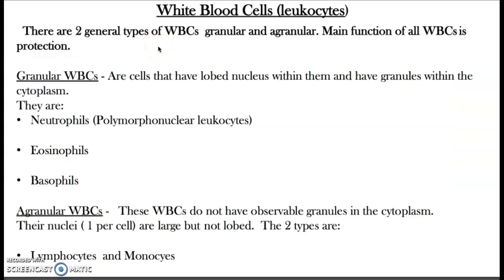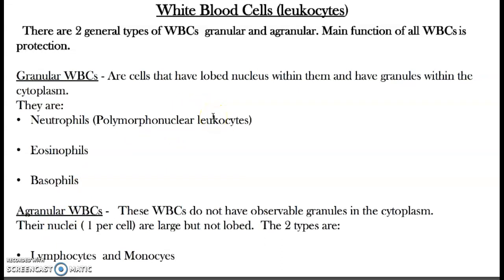Then we have the white blood cells or leukocytes — 'leuko' meaning white and 'cyte' meaning cells. We have two general kinds: the first kind has granules inside, called granulocytes, and the other kind has no granules inside, called agranulocytes. These granules have colors under the dyeing process — eosinophils are colored with acidic dye, basophils with bluish dye, and neutrophils have granules but no defined color.